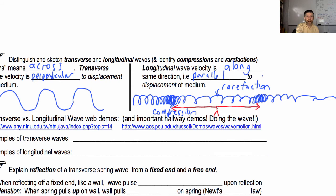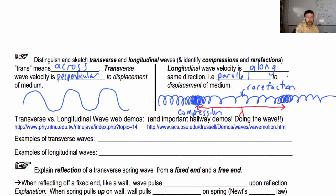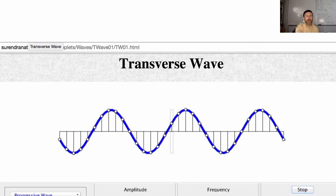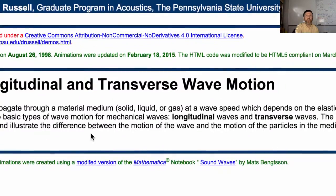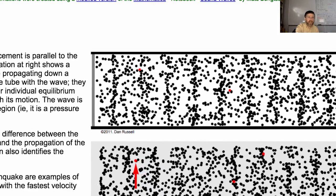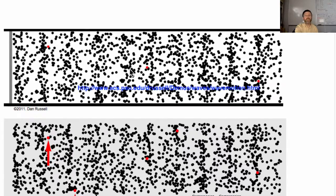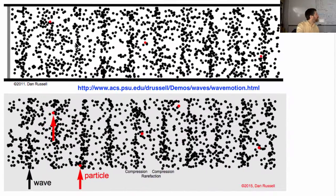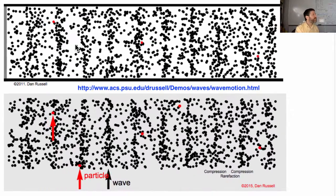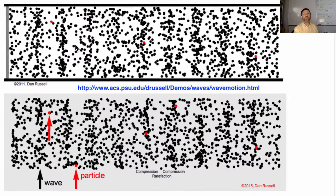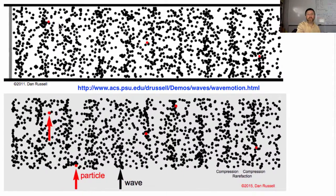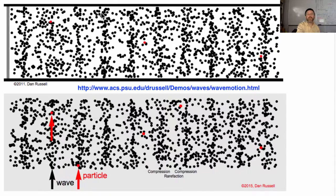Here are more examples. Here is another example of a longitudinal wave — especially a good one — taking place in a gas. The little dots represent molecules. Looking at this wave, the parts that are all scrunched together are compressions.